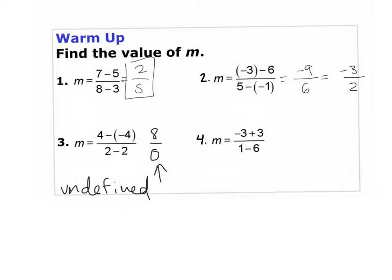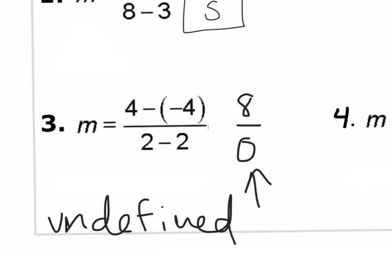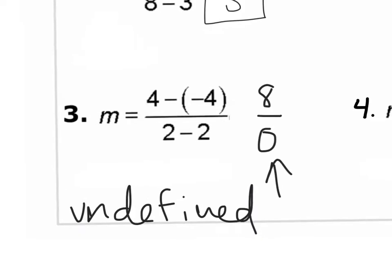Now let's look at number 4. What do we get for number 4? 0 over negative 5. So what does this simplify to? 0. We can have a 0 on the numerator and the answer will be 0. But when we have a 0 on the denominator, the answer is undefined.